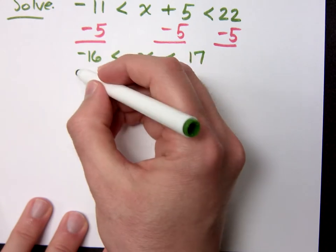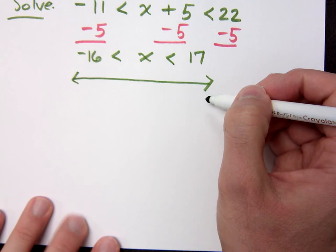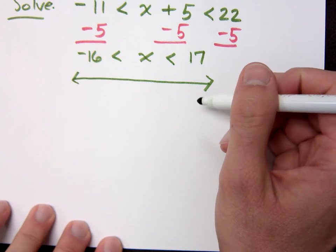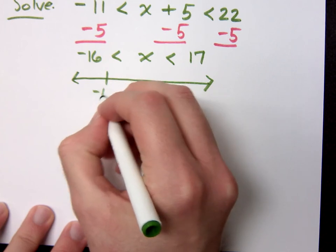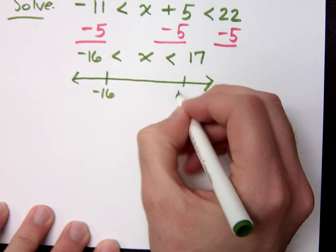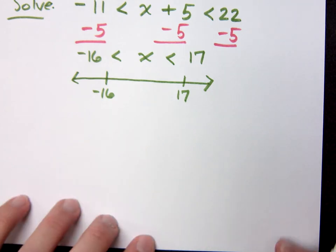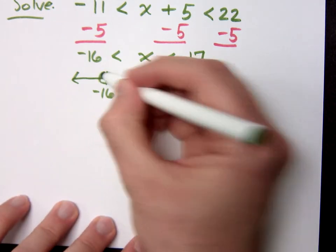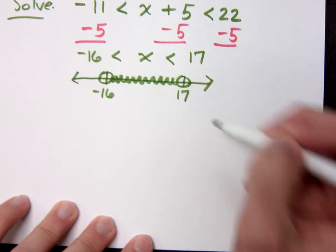If I graph this guy, I've got negative 16, I've got 17. X is between these guys, right? So my solution set when I graph this is all these guys in between. Do y'all agree? Yes.